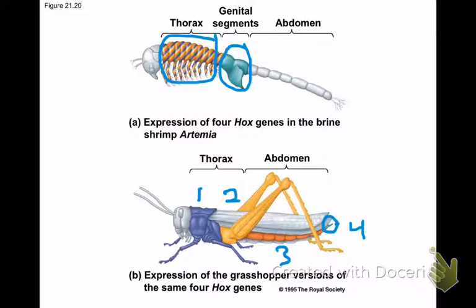It's these changes in the pattern and timing of Hox gene expression that result in complex body plans, and more complex body plans have evolved due to the duplication of these Hox genes. When you duplicate a gene, it can then be selected differently while still retaining the original function of the first copy. That's all the information we need to know about Hox genes.